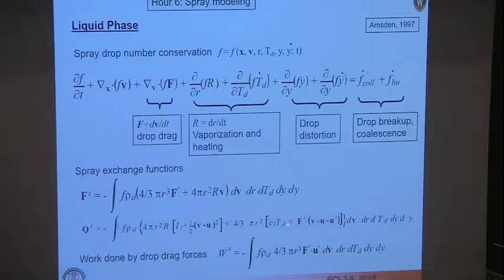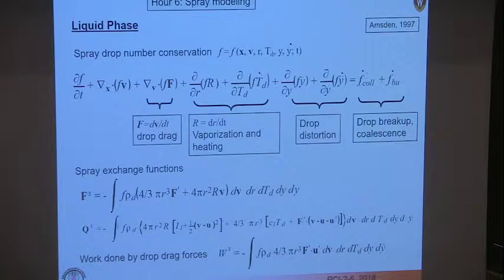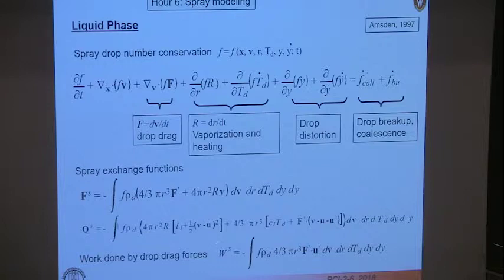The vapor leaving the droplet adds energy to the gas phase. You also have energy taken from the gas phase because the droplet temperature changes due to vaporization — so you can have cooling. There are also work terms from the drag force operating over a distance. The drag force also appears in the turbulence model.